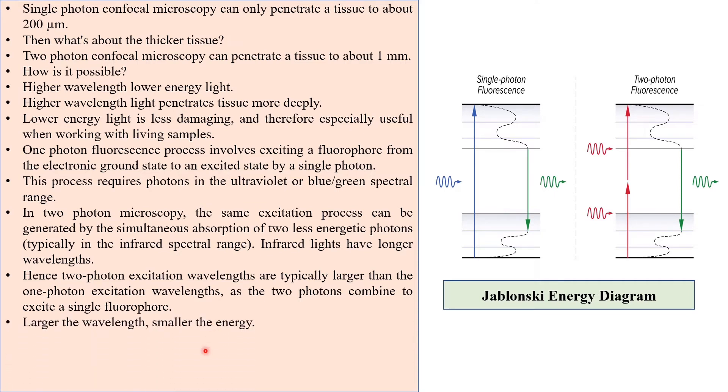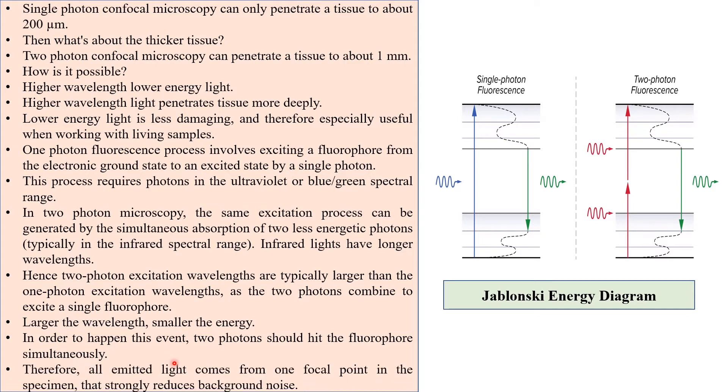Larger the wavelength, smaller the energy. In order for this event to happen, two photons should hit the fluorophore simultaneously. Therefore, all emitted light comes from one focal point in the specimen, which strongly reduces background noise.